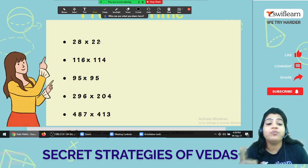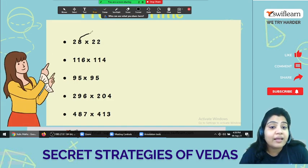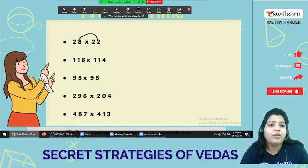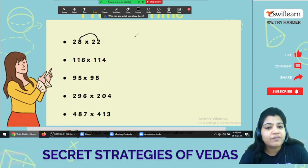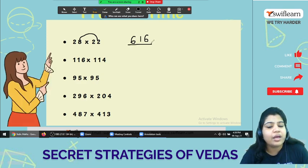28 times 22. Your last digit sum is 10. So 2 and the next number 2 times 3 is 6. 8 times 2 is 16 and your answer.